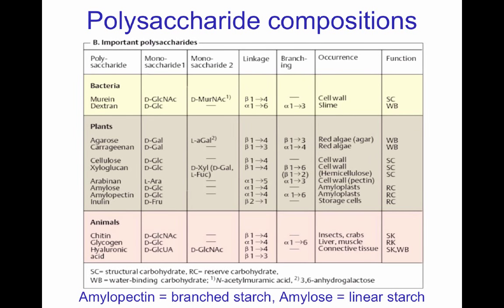A table shows the different kinds of polysaccharides present in organic molecules, divided by groups: murein and dextran found in bacteria, plant polymers, and animal polymers. It shows the monomers making each polymer, any secondary monosaccharides, linkages such as beta-1,4, and whether the polymer branches. For example, murein—another word for peptidoglycan—contains N-acetylglucosamine and N-acetylmuramic acid.